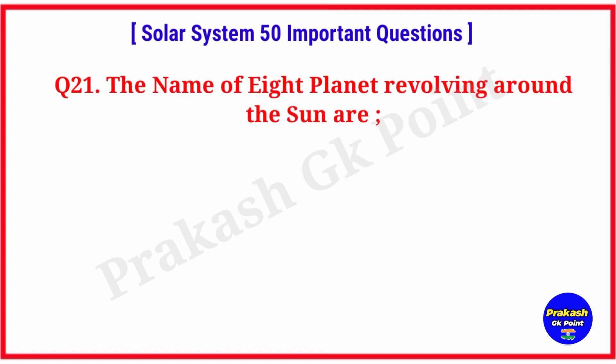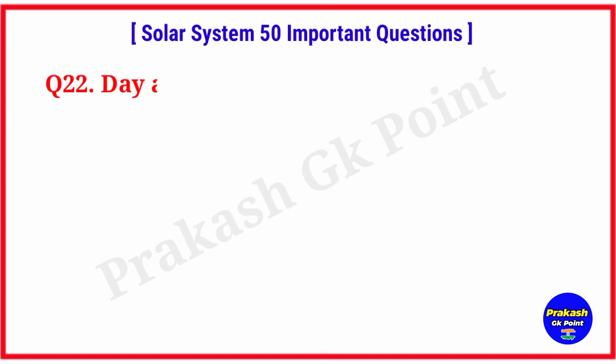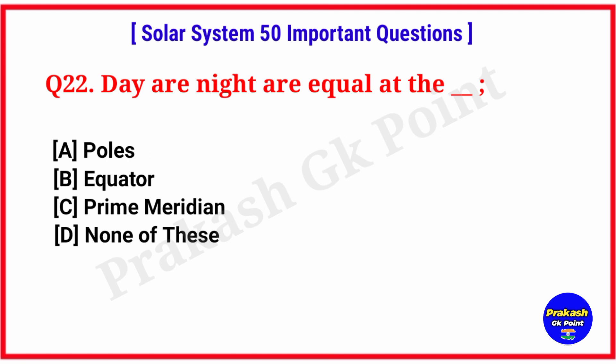The names of the 8 planets revolving around the sun are: Jupiter, Mercury, Venus, Saturn, Uranus, Neptune, Mars, and Earth. Day and night are equal at the? Answer: option B, equator.